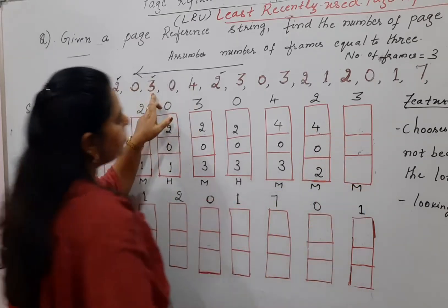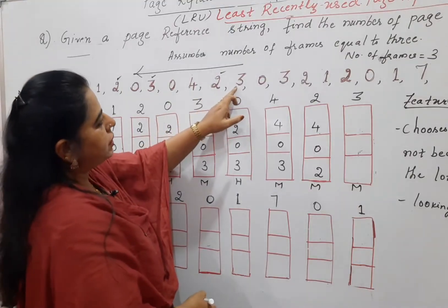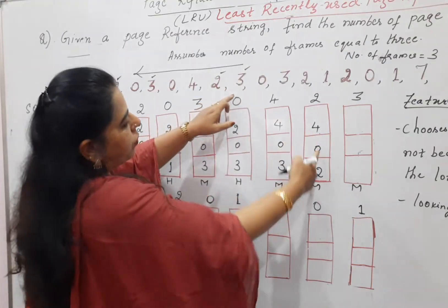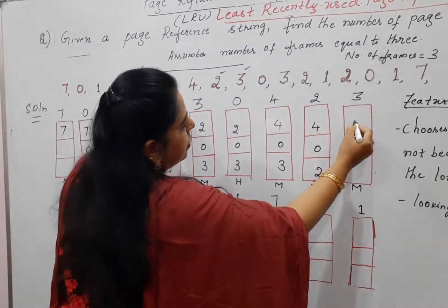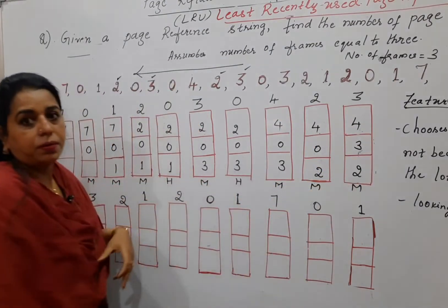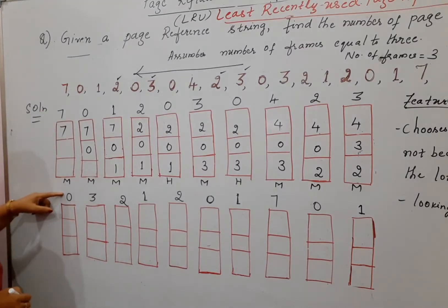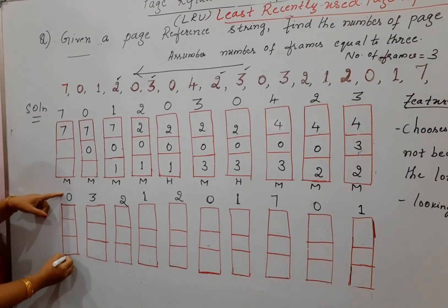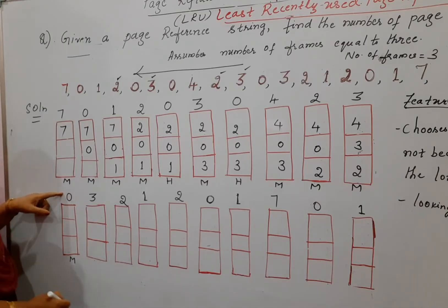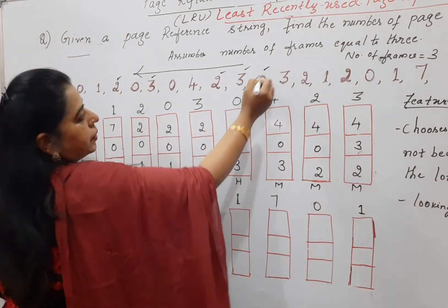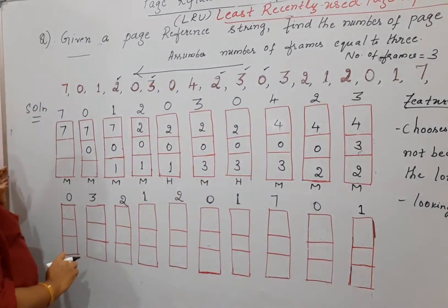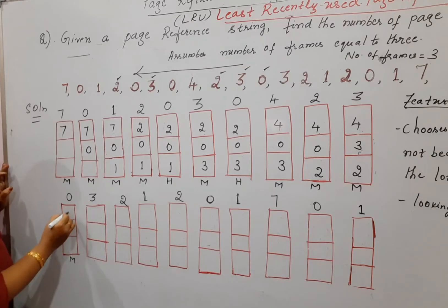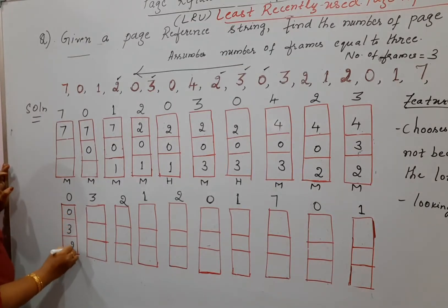Three is not there — it is a miss. Looking backward, frames hold four, zero, and two. Zero is the one used long ago, so replace zero and write three. Frames are now four, two, and three. Next is page zero — not there, so it is a miss. Looking backward, previous pages are three, two, four — four can be replaced. So in place of four, write zero; the rest remain.